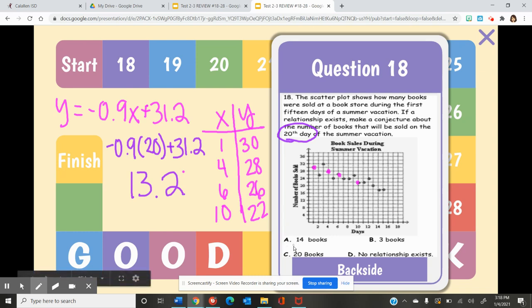So here we want to choose the answer choice that is closest to the answer we found. The closest answer to 13.2 is going to be A, 14 books. I encourage you to move on to the next question. Thank you.